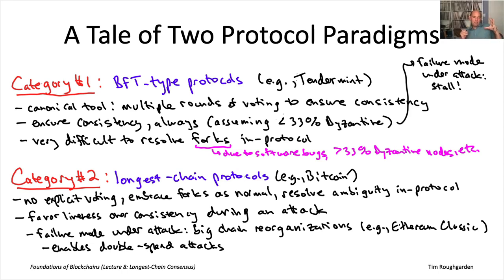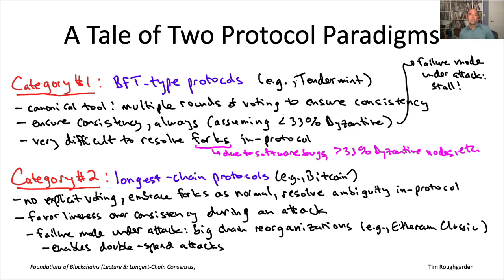Before we wrap up this video, let me emphasize: it's not the case that literally 100% of consensus protocols in the blockchain world fall into one of these two categories. A lot of them do — I'd guess like 70–80% or something like that. There are a few exceptions, and we may cover one or two of those in a future lecture. But certainly these two categories will allow you to classify most of the major blockchain protocols out there. I'm mostly done with what I want to tell you about BFT type protocols — we've obviously already had a number of lectures on them. So now it's time to look at this 21st century invention: longest chain protocols. I'll tell you exactly how those work starting in the next video. I'll see you there.